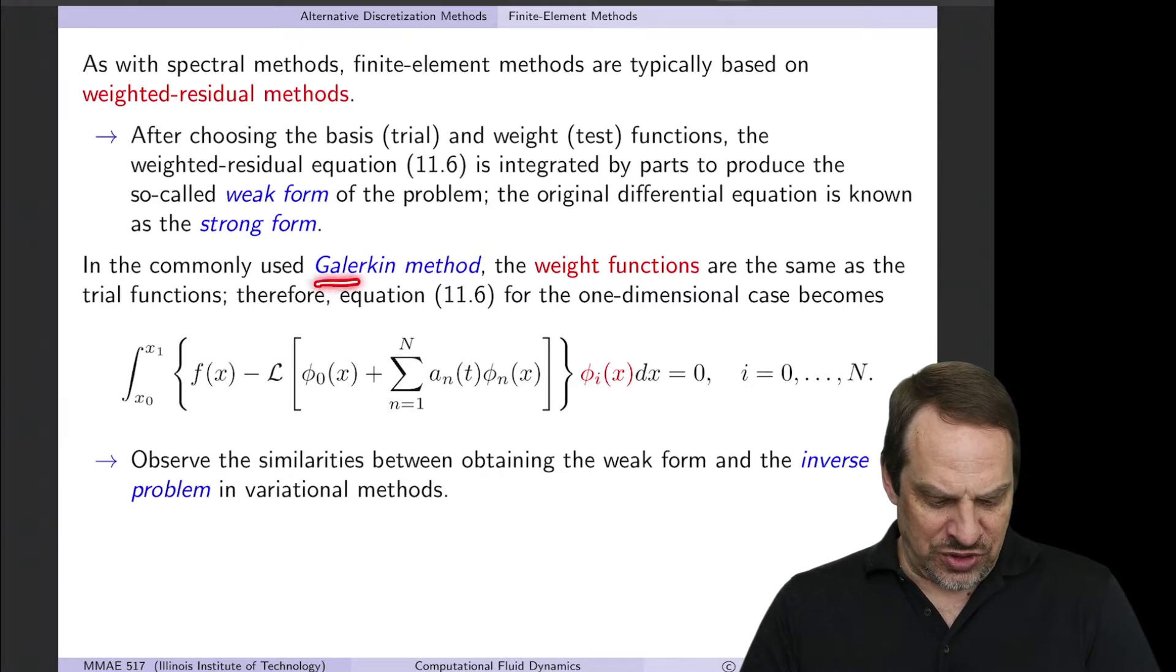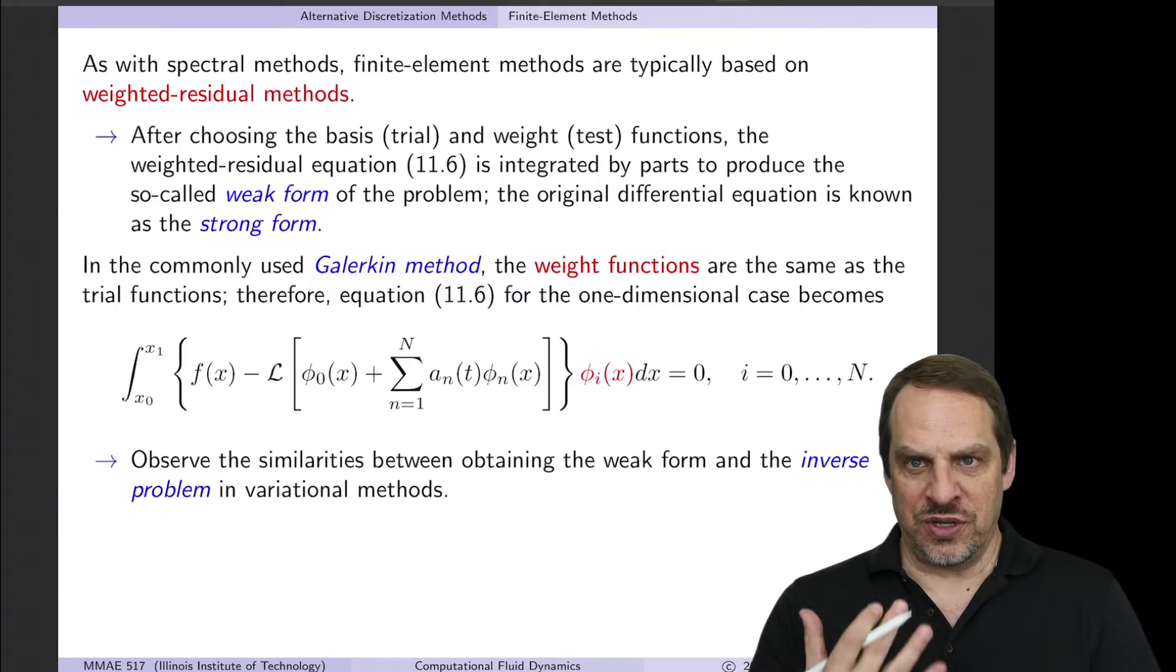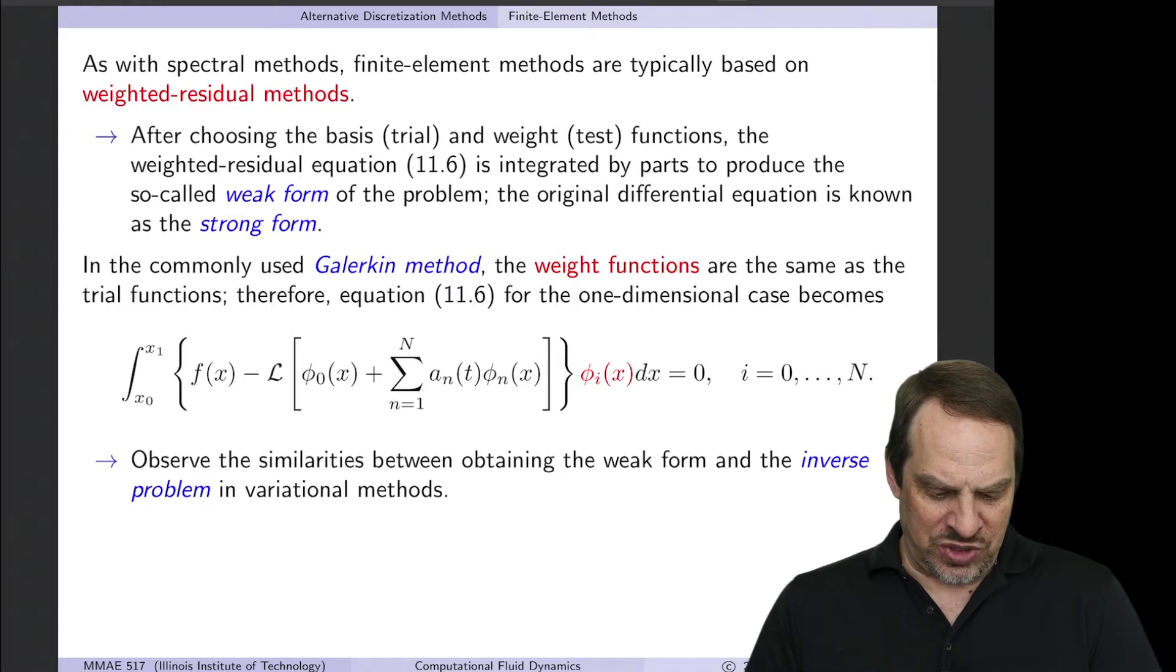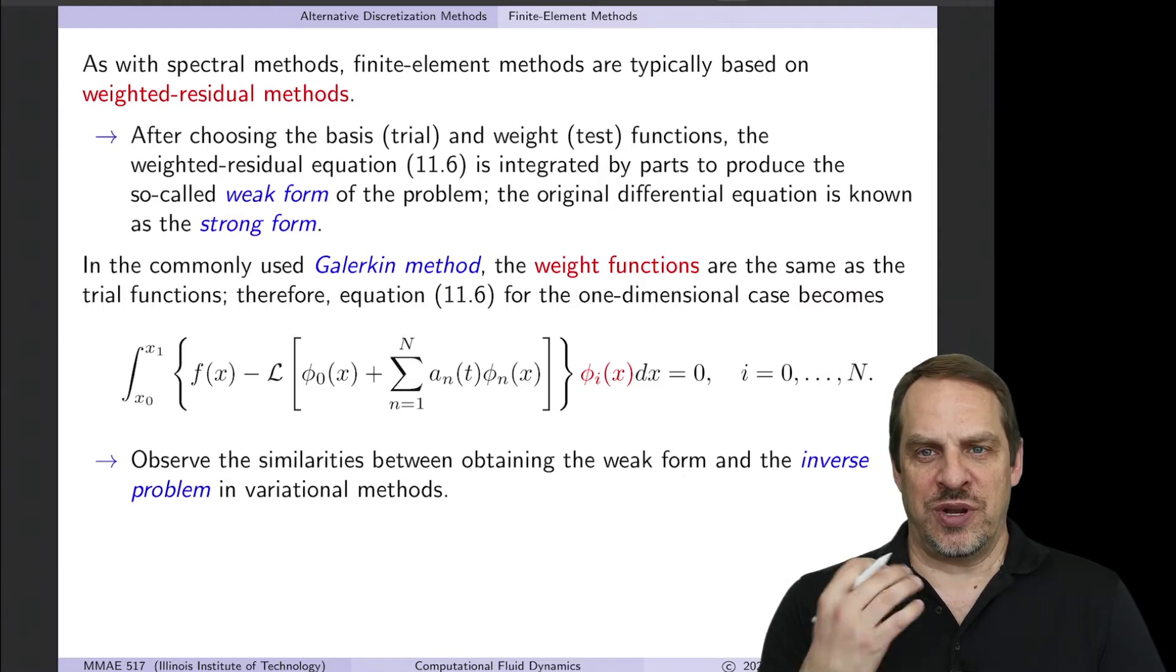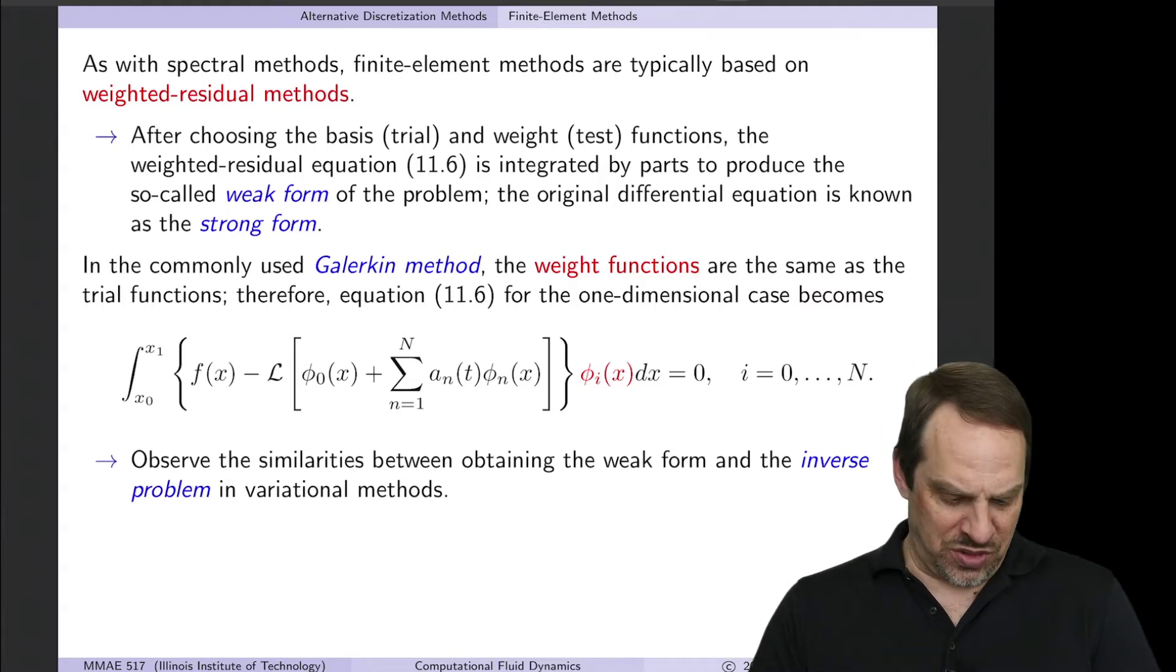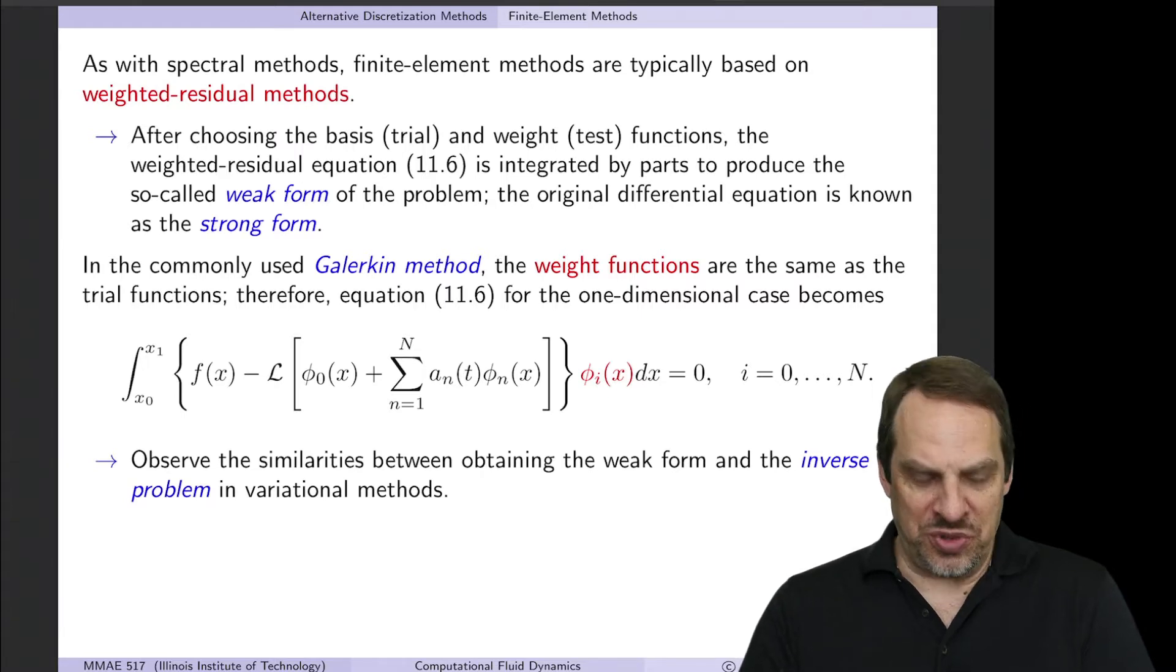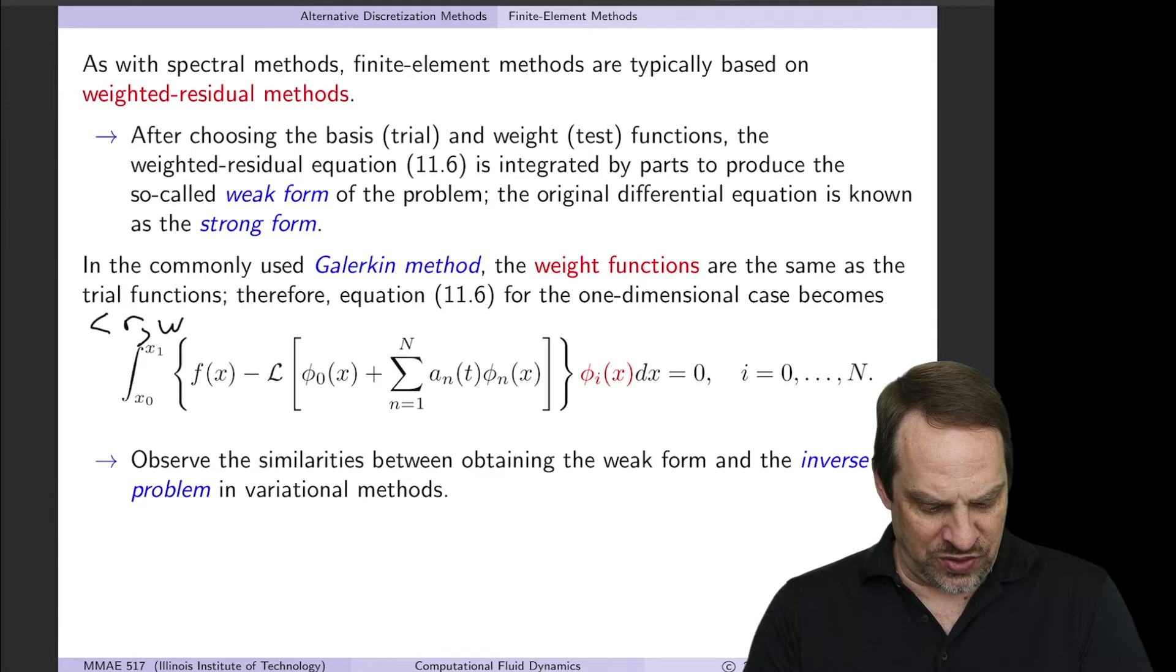The common approach is to use the Galerkin method. That's not always done, but that's very common. In which case the weight functions, the W's, are the same as the basis functions that we select in order to represent the approximate numerical solution. If you remember from that previous video, we had the inner product of R with the W sub i, and that's being set equal to zero.